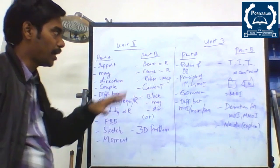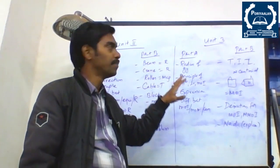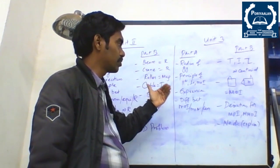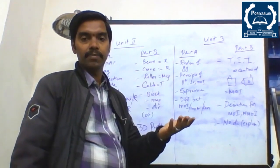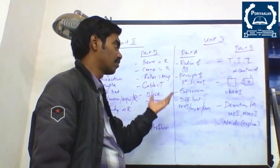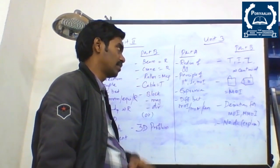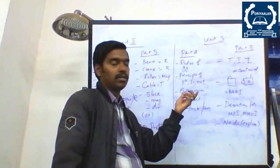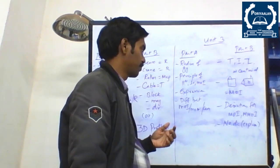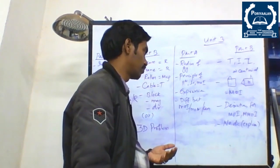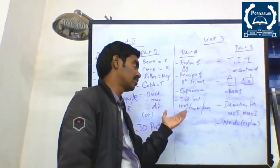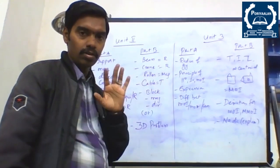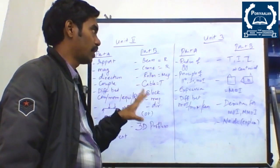In Unit 3, Part A, the repeated question that is always available is defining the radius of gyration. The second question should be about principles — write the principle of the parallel axis theorem or perpendicular axis theorem for moment of inertia. They ask you to write the principle for two marks, or sometimes to write the expression for a corresponding given body or shape, or find the difference between moment of inertia, moment of area, or centroid. These are the repeated questions always available in all semesters for Part A in Unit 3.